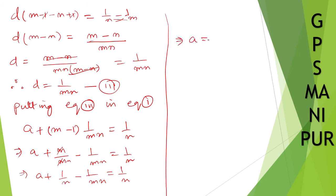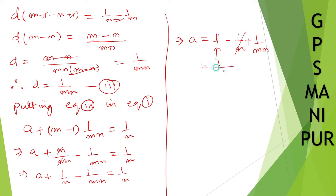So, a equals 1/n minus 1/n plus 1/mn. The 1/n terms cancel, giving a equals 1/mn. So we have found both the value of a and d — both equal to 1/mn.